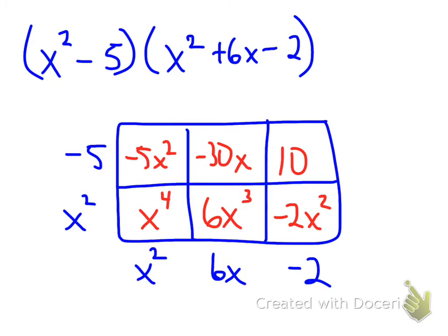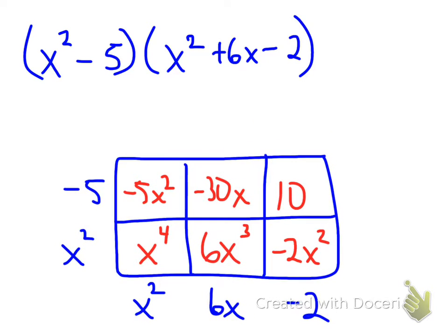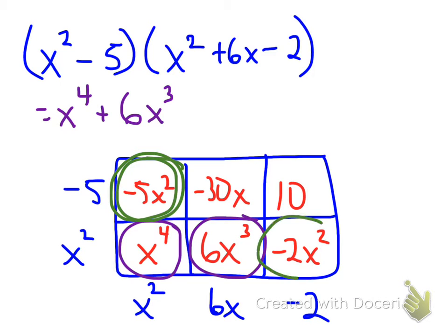Now, I need to be careful when I'm combining like terms. So I have my x to the fourth. There are no other x to the fourths. I only have one x to the third here, so I can't combine with anything else. So I have 6x to the third. But now I do have two different boxes that have x squareds.